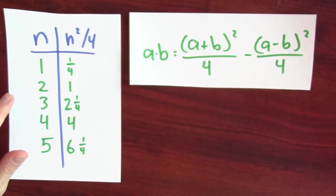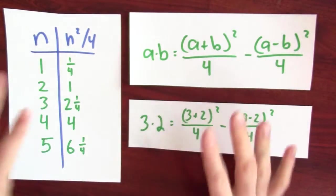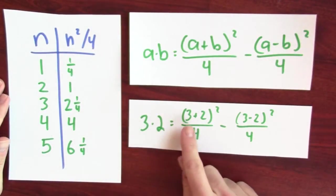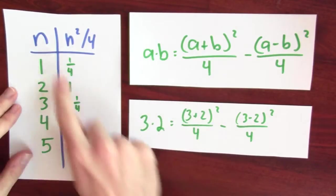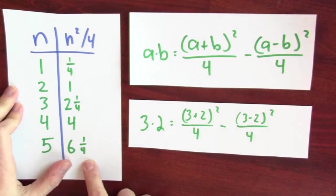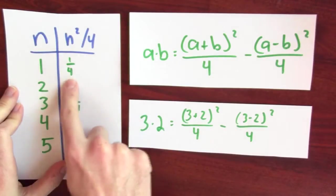For instance, let's suppose that I want to multiply 3 times 2. I mean, this is a ridiculously easy case, but just to show off how it works. Let's multiply 3 times 2. I'll add 3 and 2, and I get 5. And I look it up in my table, and 5 squared over 4 is 6 and a quarter. I take the difference, 3 minus 2 is 1. And if I look up 1 in my table, I get a quarter.